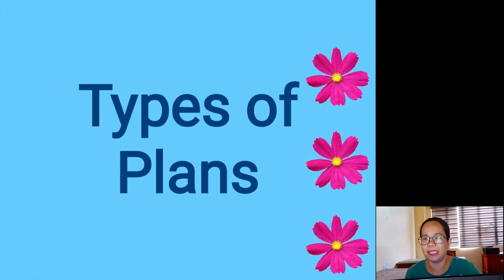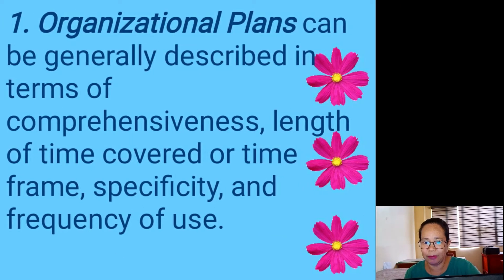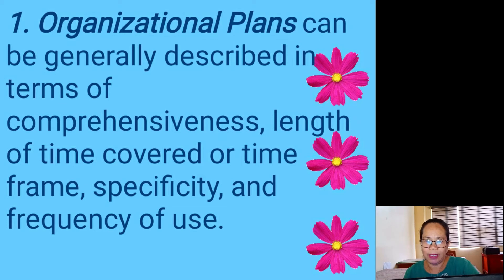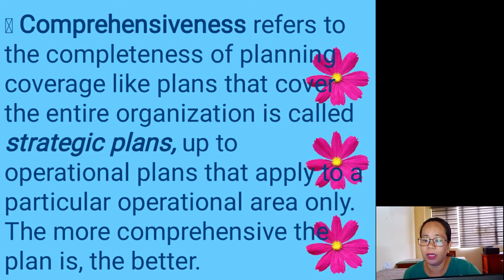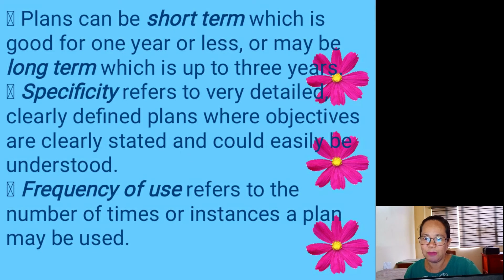What are the two types of plans? Organizational plans can generally be described in terms of comprehensiveness, length of time covered or time frame, specificity, and frequency of use. Comprehensiveness refers to the completeness of planning coverage — plans that cover the entire organization are called strategic plans, up to operational plans that apply to a particular operational area only. The more comprehensive the plan, the better.